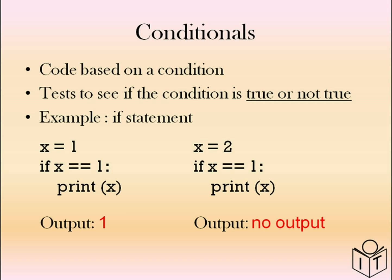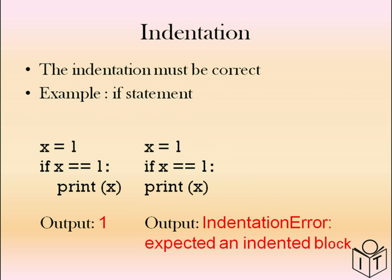So you check x is 1, which is true, so it prints x. In the other example, the condition is false, so you don't print x. If we look at the if statement, there are certain parts. It starts with the word if, then we have the condition that checks x equals 1, then we have a colon and the code underneath. Notice there's a gap — it doesn't start at the beginning. This is called an indentation.